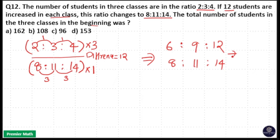Here you can see the difference is now consistent. The difference between 14 and 12 is 2, 11 and 9 is 2, 8 and 6 is 2. So 2 units = 12, therefore 1 unit = 6.